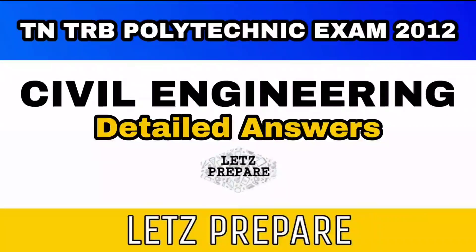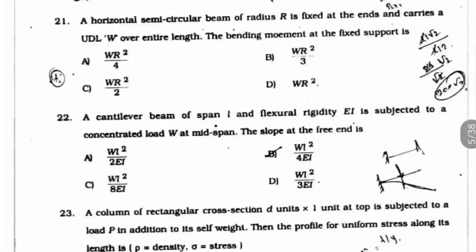Let's prepare on the TN-TRB Polytechnic Exam 2012 Civil Engineering Question Paper. Question 21: A horizontal semicircular beam of radius R is fixed at the ends and carries a UDL W over its entire length. The bending moment at the fixed support is what? Here option D is the right answer, WR square.